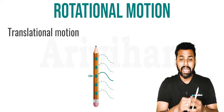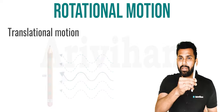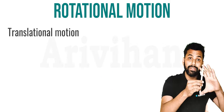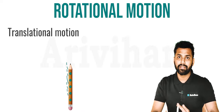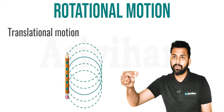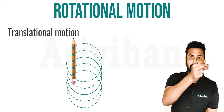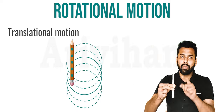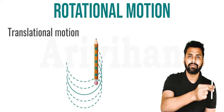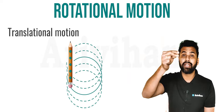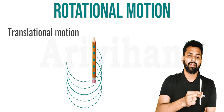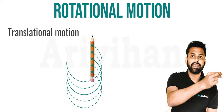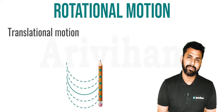Now, if you look at rotational motion — the object moves in a circle. Each point of the object traces a circular path. All points trace circles and become the same radius from the axis. As soon as rotation occurs, the circle will have the same radius.